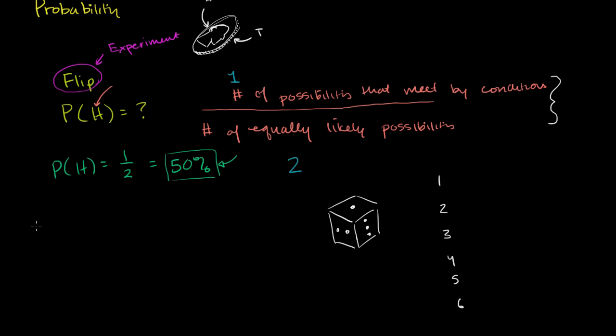So if I were to ask you, what is the probability, given that I'm rolling a fair die—so the experiment is rolling this fair die—what is the probability of getting a 1? Well, what are the number of equally likely possibilities? Well, I have six equally likely possibilities. And how many of those meet my conditions? Well, only one of them meets my condition. So there is a 1/6 probability of rolling a 1.